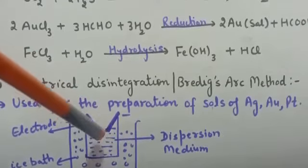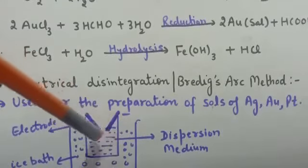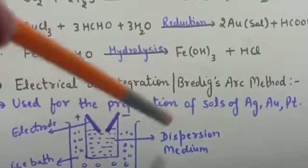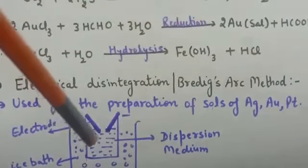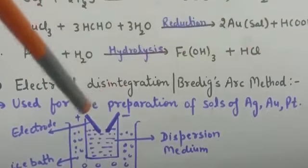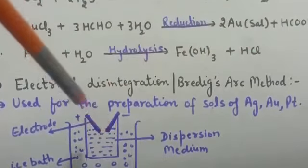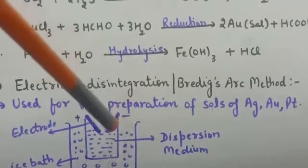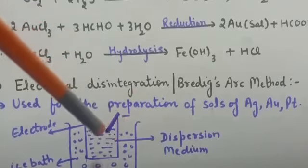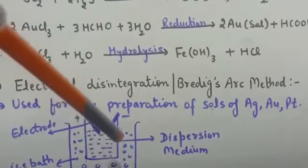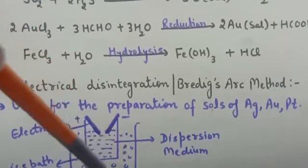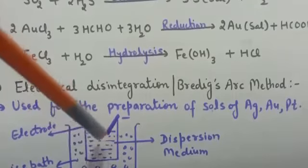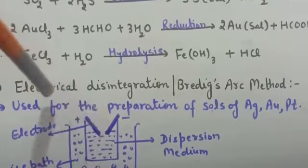The ice condenses the metal ions into the dispersion medium, and the size of those metal ions falls in the colloidal range — 1 nanometer to 1000 nanometer. So by Bredig's arc method, we can prepare the sol of gold, silver, or platinum. In summary: metal electrodes are used, an electric arc is struck between them, the heat vaporizes the metal into the dispersion medium, and the ice helps condense the metal ions to form the colloid.